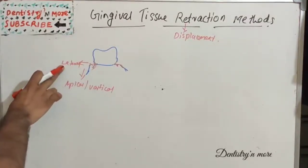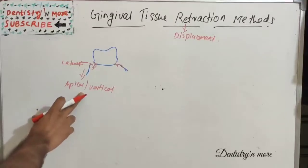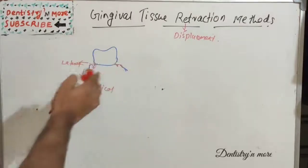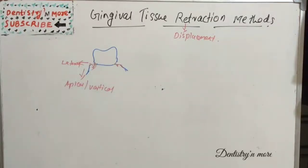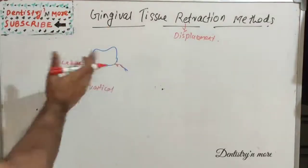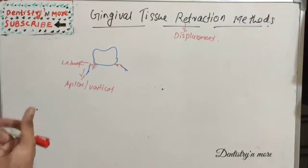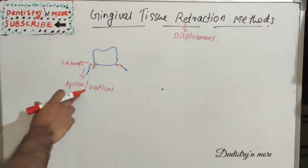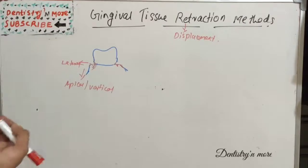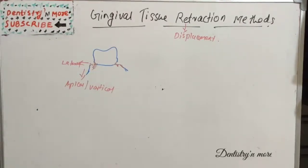There are two types of gingival displacement. One is lateral movement or lateral displacement, and another is apical or vertical displacement. Lateral displacement means the tissue is deflected from the tooth laterally, helping us take a proper impression. Apical or vertical displacement exposes the uncut portion of the tooth apical to the finish line, but it may cause trauma followed by recession.